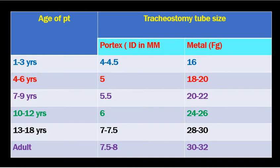Regarding tracheostomy tube sizes by age: for children aged 1–3 years, use Portex tube inner diameter 4–4.5 mm, metal tube size 16 (Portex size 4 equals metal size 16, i.e., multiply by 4). Ages 4–6: Portex 5, metal 18–20. Ages 7–9: Portex 5.5, metal 20–22. Ages 10–12: Portex 6, metal 24–26. Ages 13–18: Portex 7–7.5, metal 28–30. Adults: commonly Portex 7.5–8, metal 30–32. Obese or larger patients may require slightly bigger tubes.